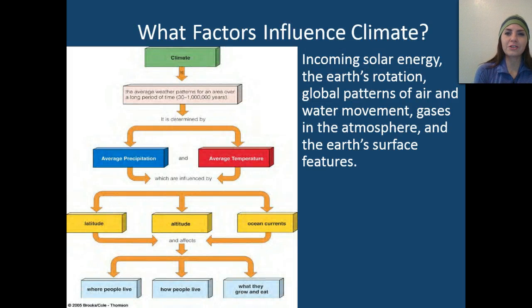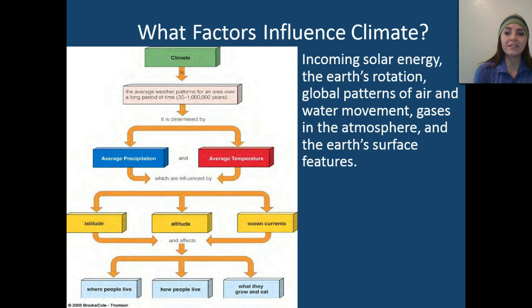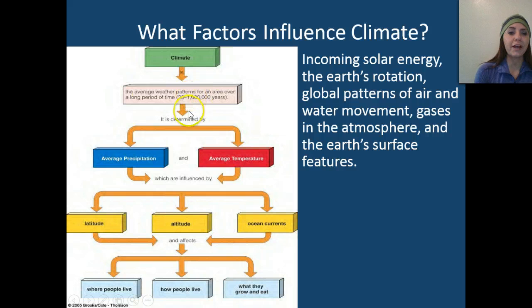What factors actually influence the climate? We have incoming solar energy from the sun, the Earth's rotation around the sun as well as its revolution around its axis, global patterns of air and water movement, gases in the atmosphere, and the Earth's surface features. Climate is the average weather patterns for an area over a long period of time — anywhere from a couple of decades, like 30 years, to over a million years.